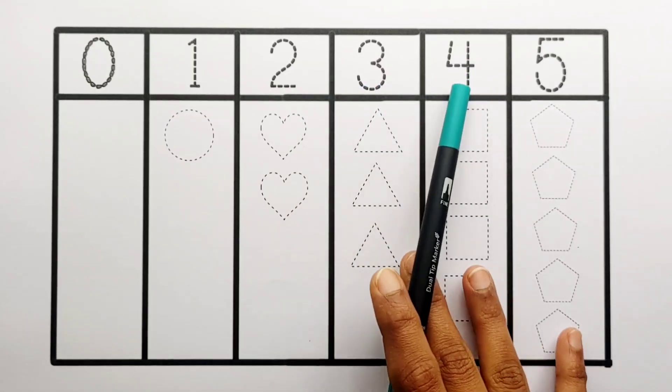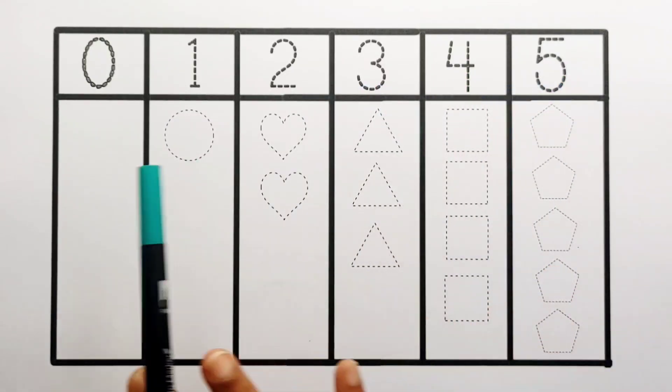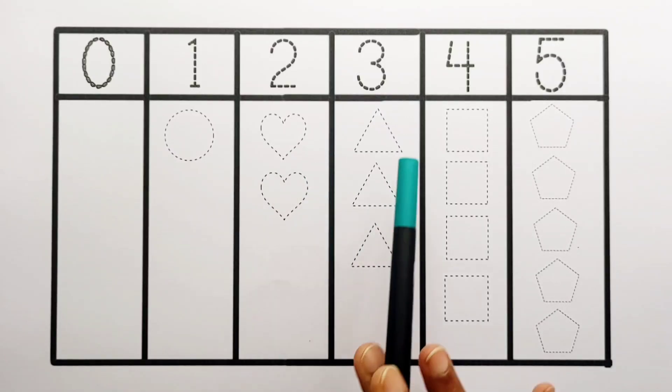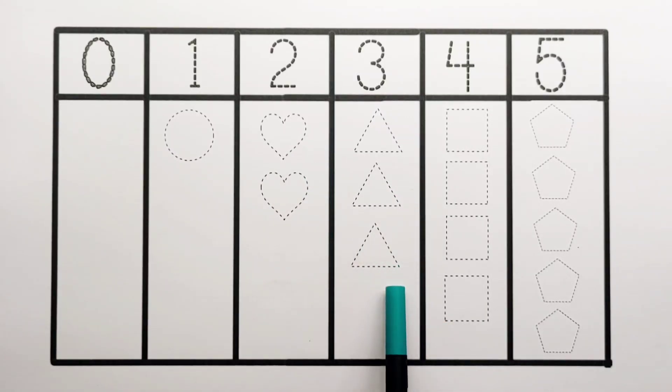2, 3, 4, 5. Zero, one circle. One, two - two hearts. One, two, three - three triangles. One, two, three, four.